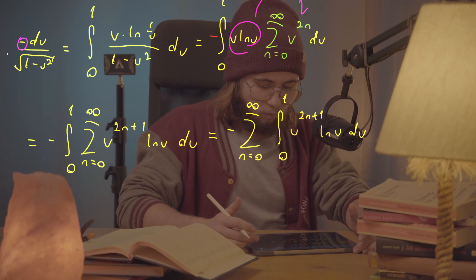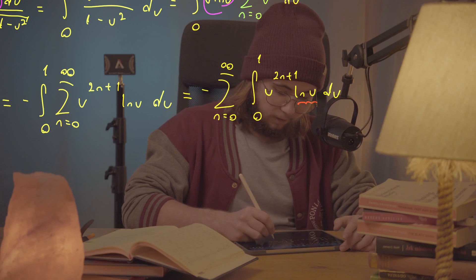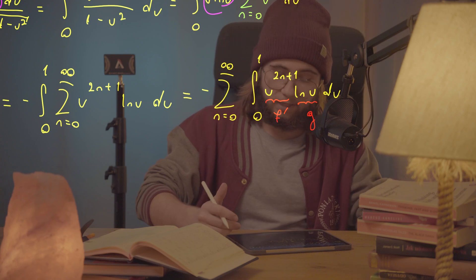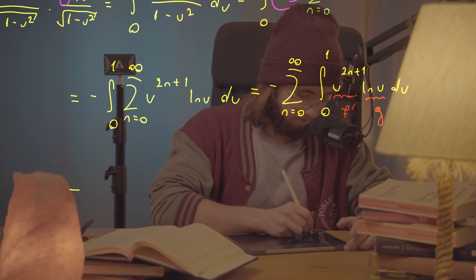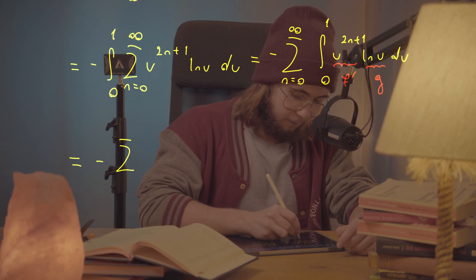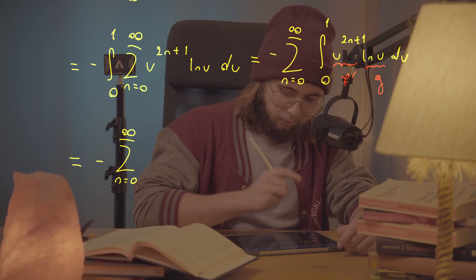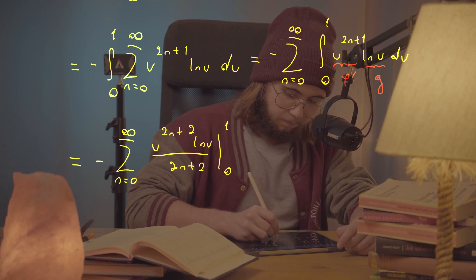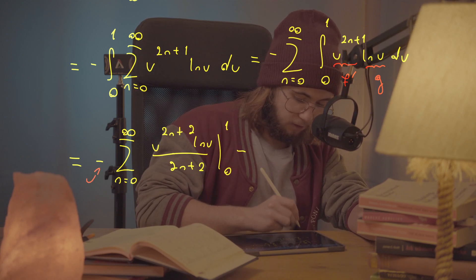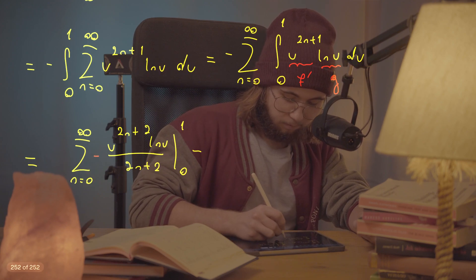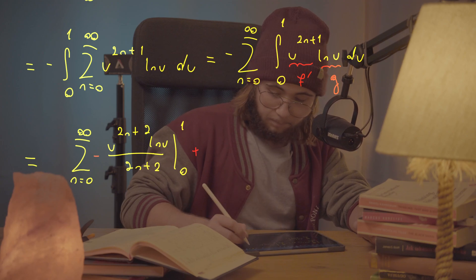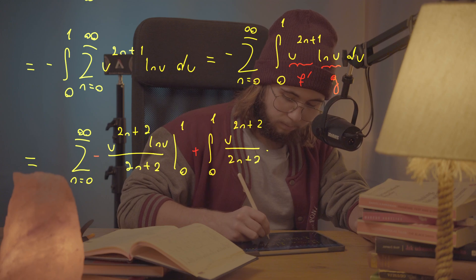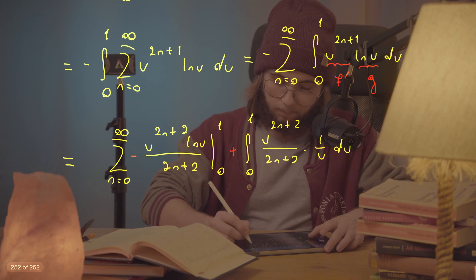I evaluate each integral using integration by parts, setting g = ln(u) and f′ = u^(2n+1). Integrating f′ gives u^(2n+2)/(2n+2), and differentiating g gives 1/u. This yields the boundary term [u^(2n+2) · ln(u) / (2n+2)] from 0 to 1, plus the integral from 0 to 1 of u^(2n+2)/(2n+2) · (1/u) du.